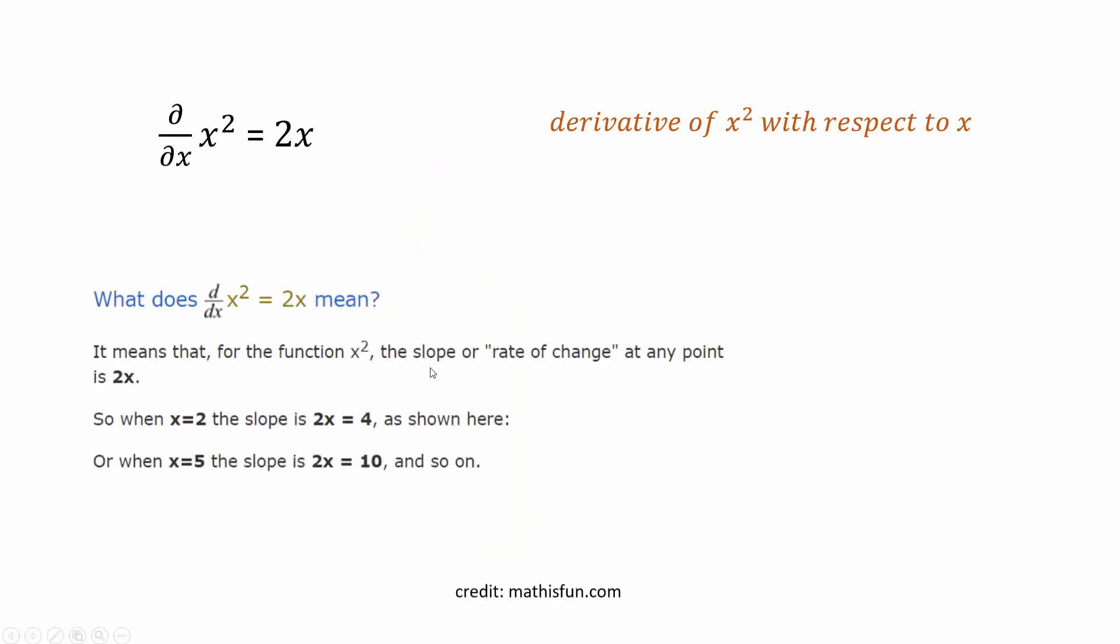So what does that 2x mean really? 2x means that if you're looking at any point, for example when x equals 2, the slope is 4. When x equals 5, the slope is 10. The slope varies between different points on the line. That's why we need to use a function to represent this slope, and that function is called a derivative.